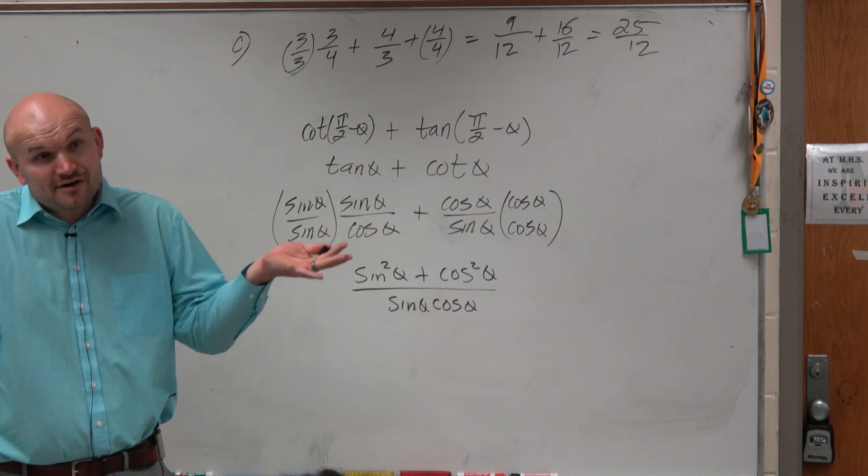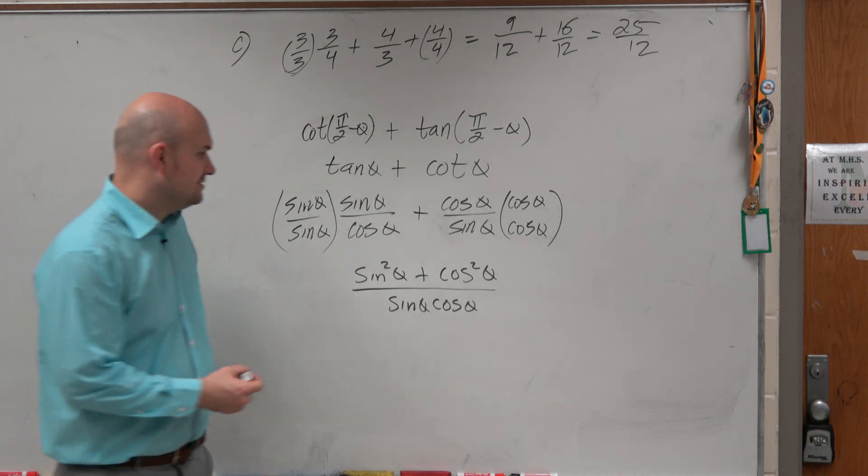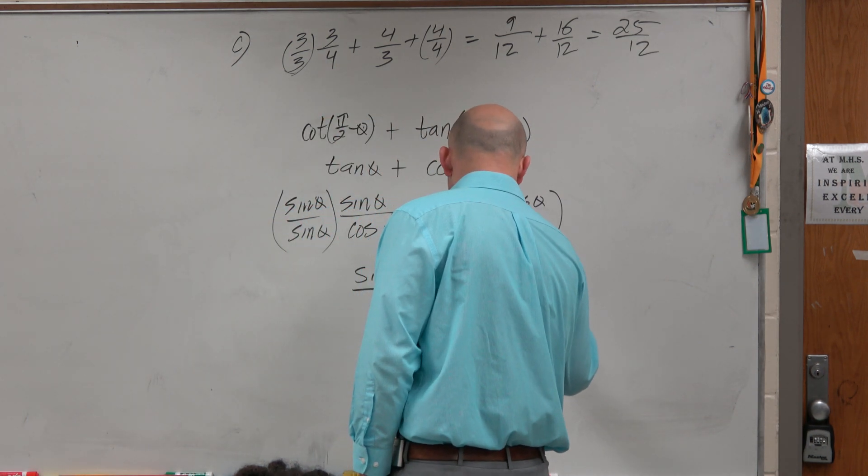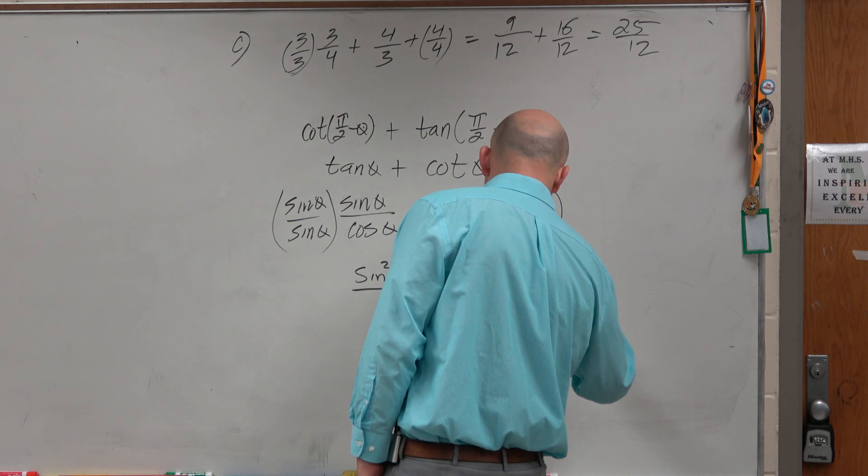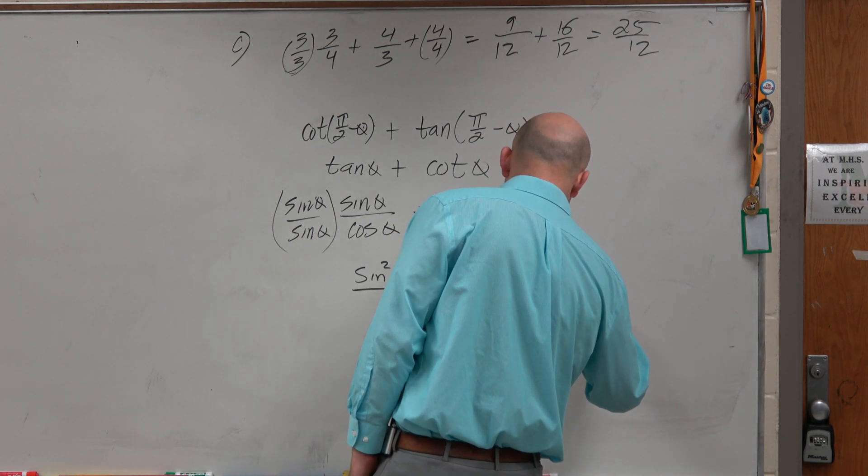It's equal to 1. It's a Pythagorean identity, right? So I can just rewrite this as 1 over sine of theta cosine of theta.